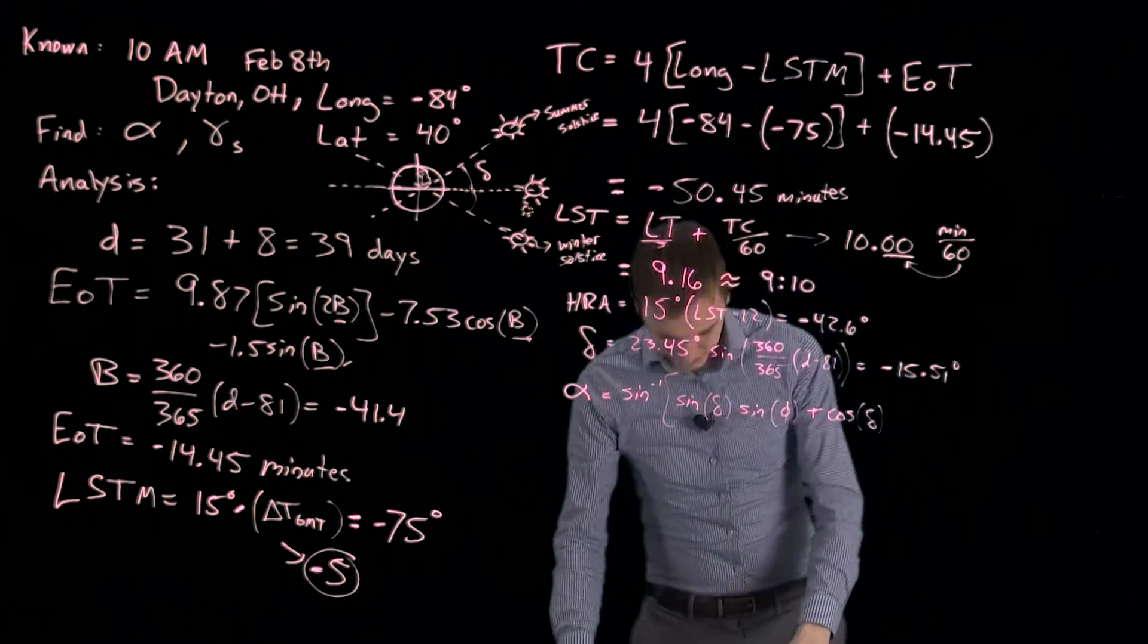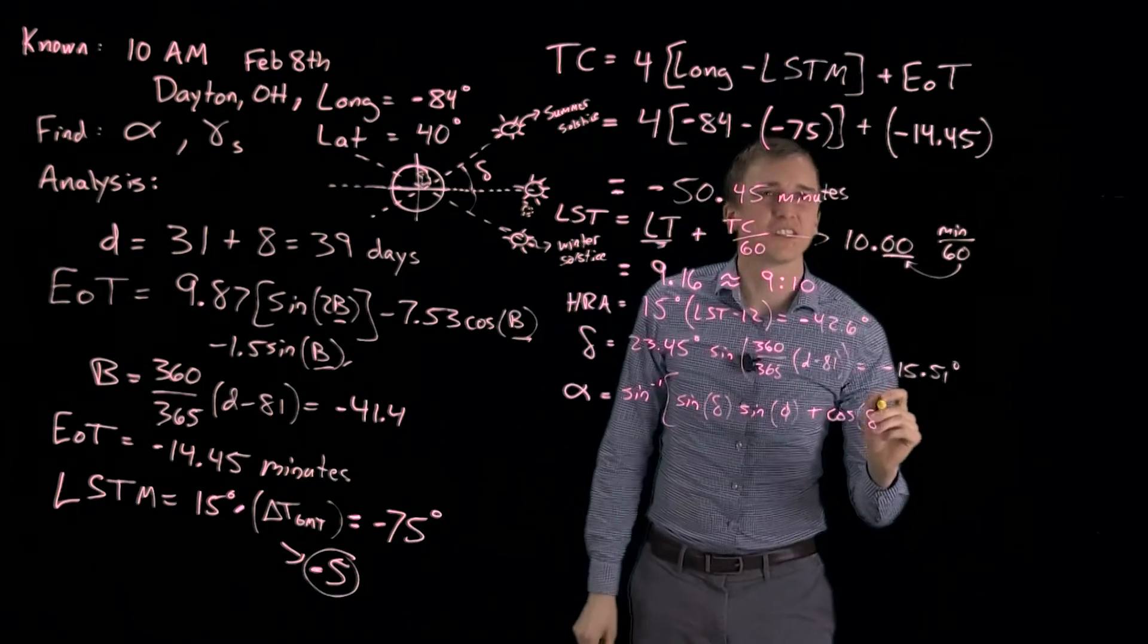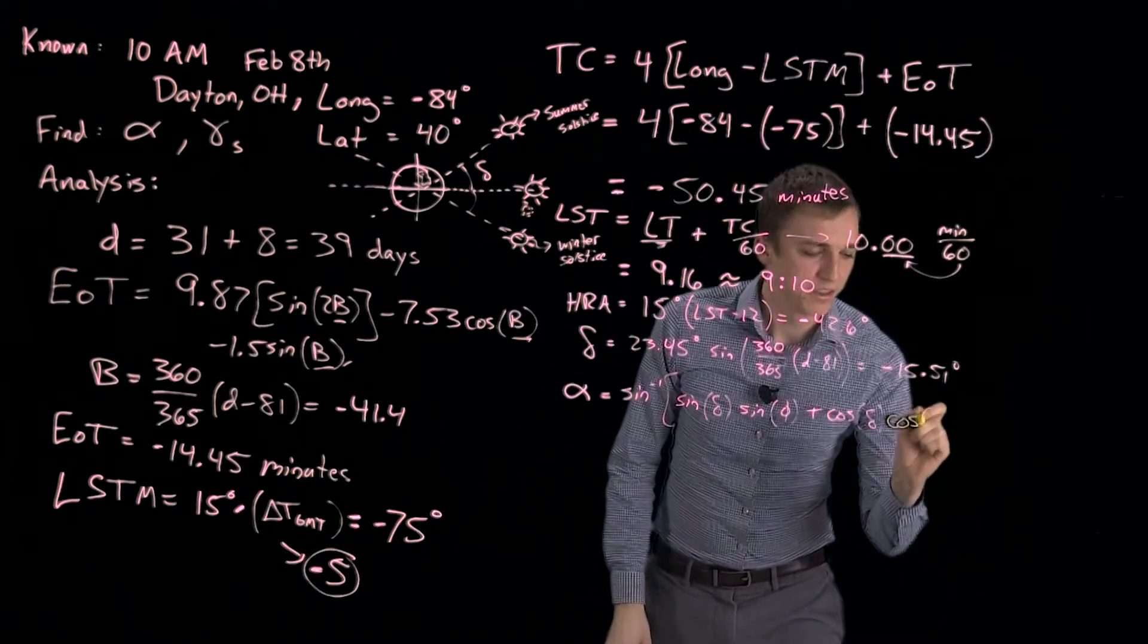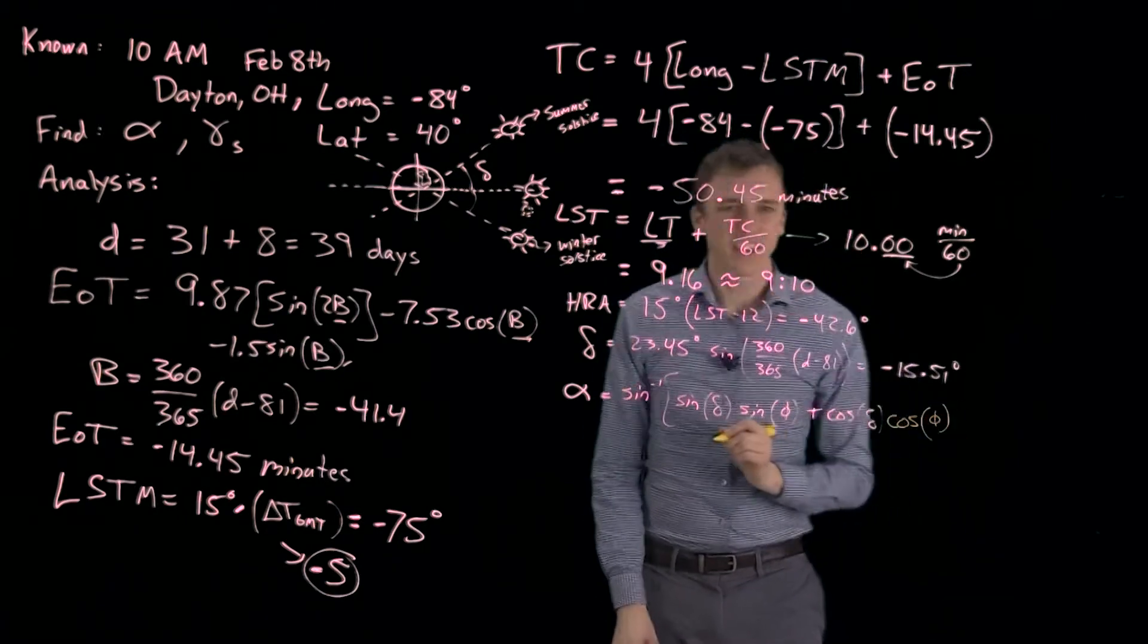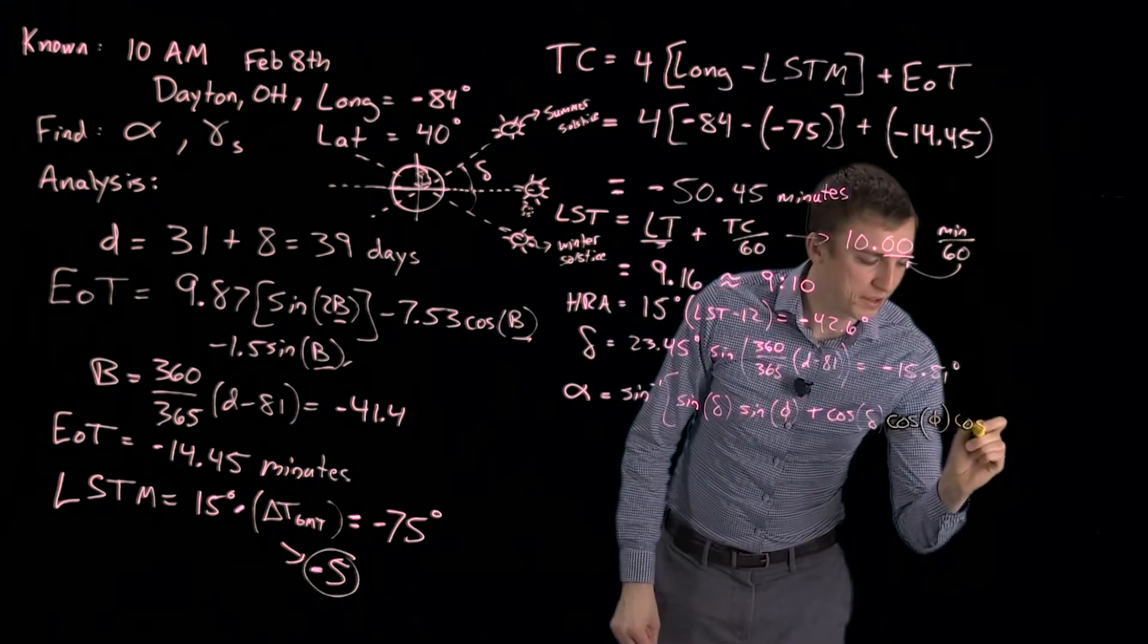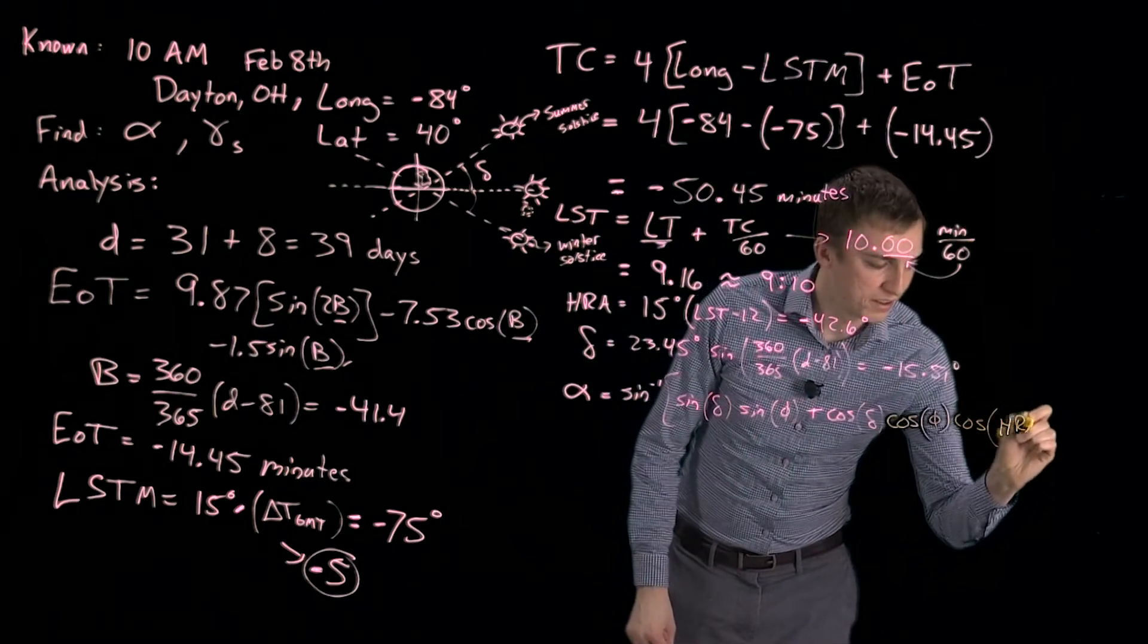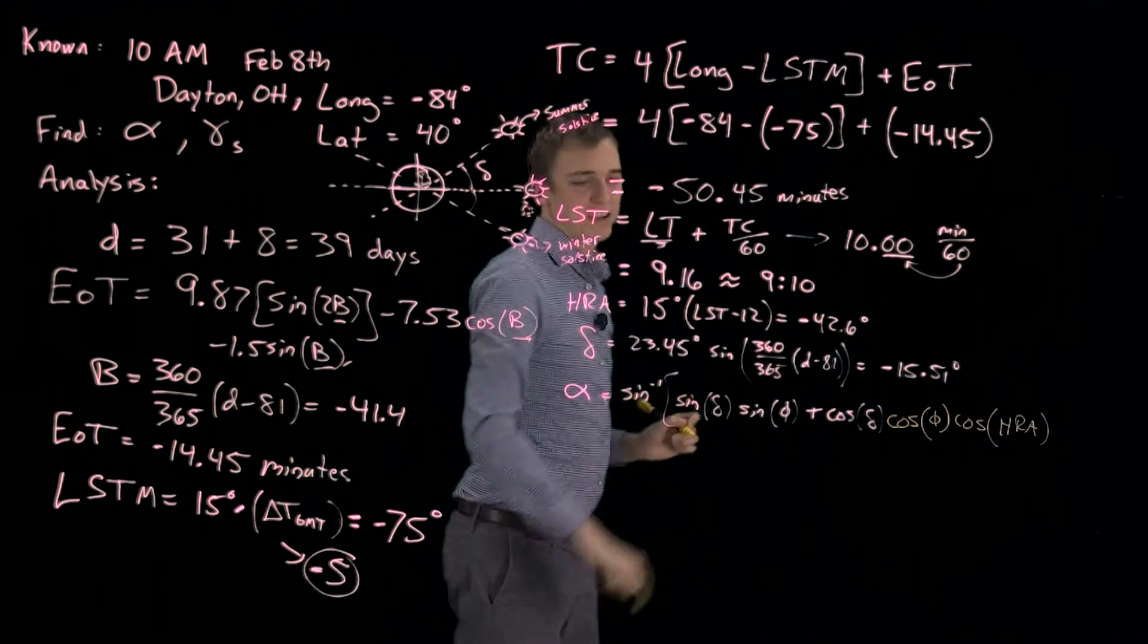Plus the cosine of our declination angle. We're going to switch colors. All right, cosine of our declination angle times the cosine of, again, our latitude. And finally, multiplied by the cosine of our angle, HRA, which we found here.